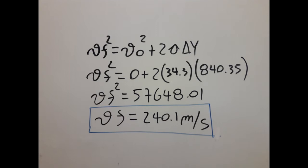As you can see, I am going to get the final velocity for stage 1, which is going to be the initial velocity for stage 2. This velocity is 240.1 meters per second.